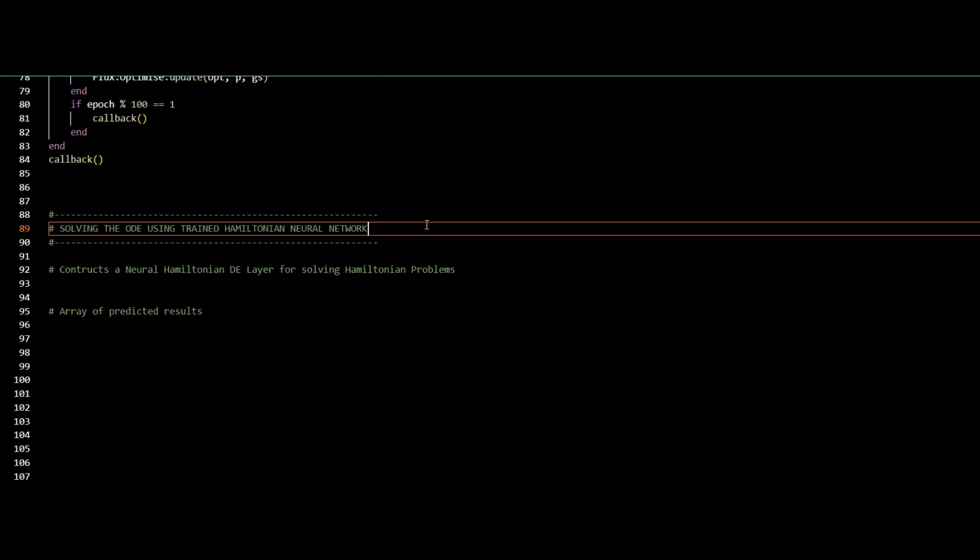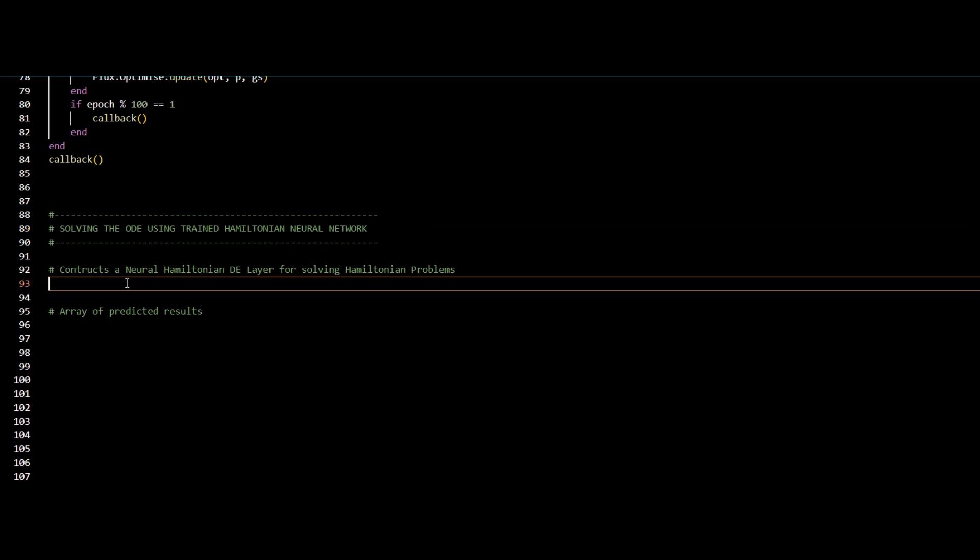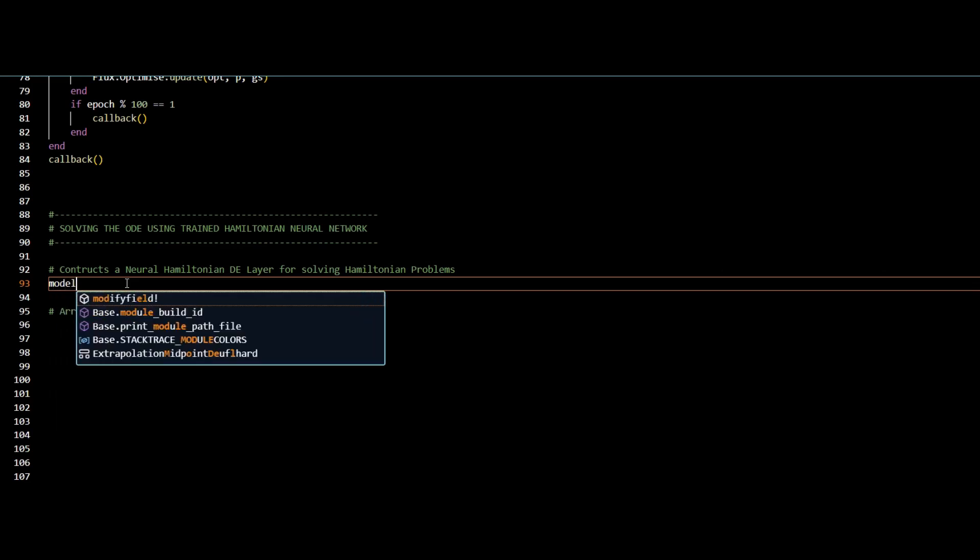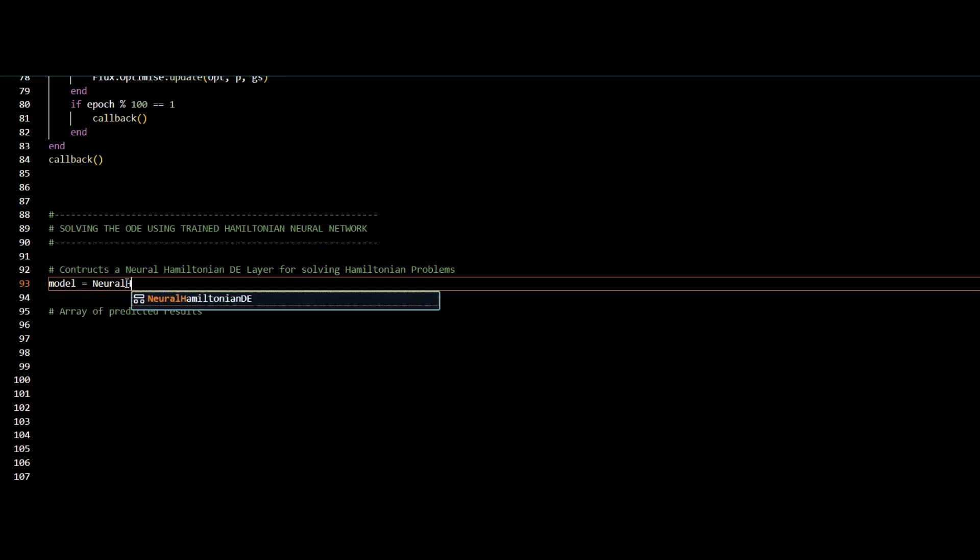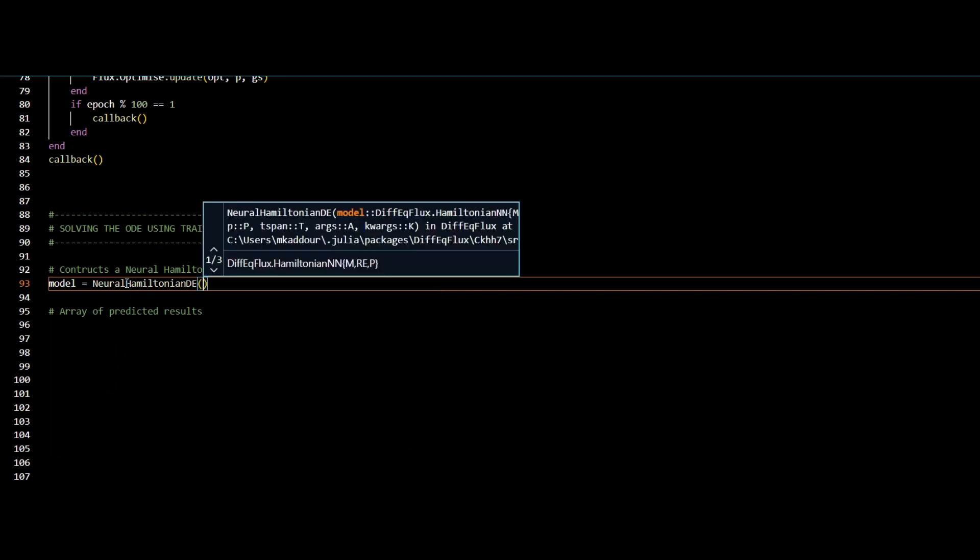The last step is to use my trained network to solve differential equations. I will use the neural Hamiltonian differential equation function as a wrapper over my trained network. I will call my trained network HNN.